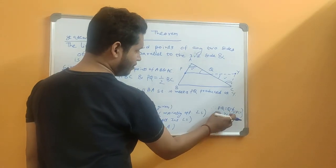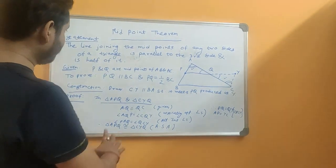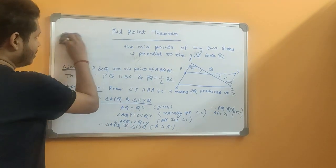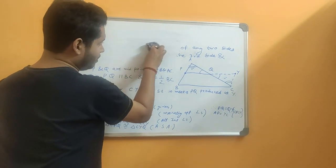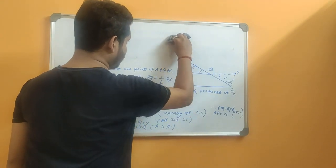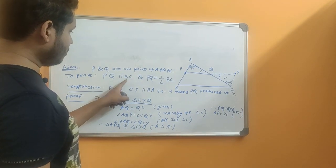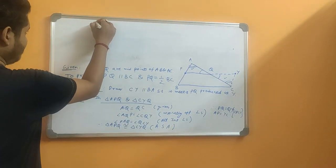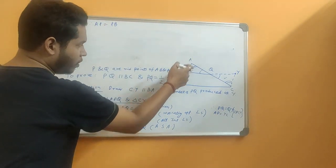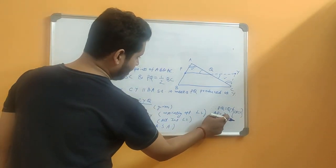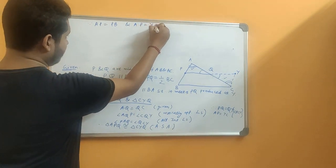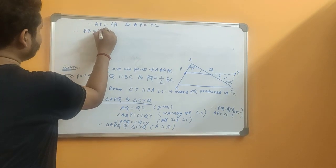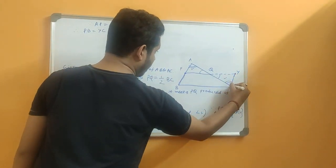These two results from the congruence are very important and we are going to use them now. Since AP is equal to PB — because P is the midpoint of that side — and from the congruence result AP is equal to YC, we can say therefore PB is equal to YC. And we also know that CY is parallel to PA by our construction, so CY is parallel to PB as well, since it is the same line.